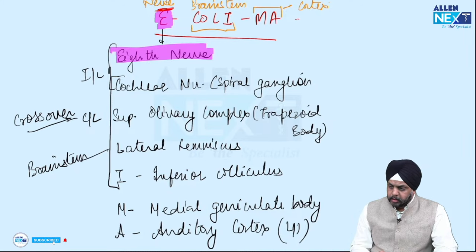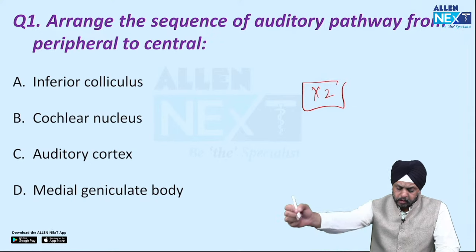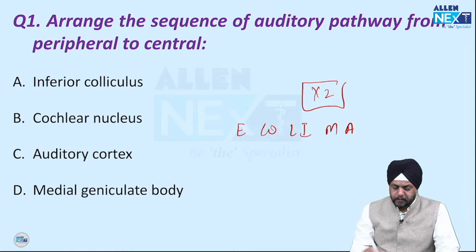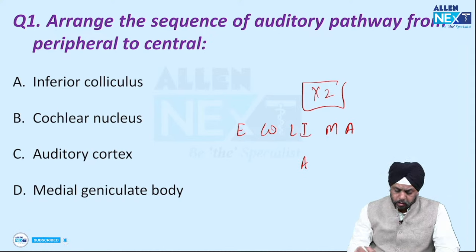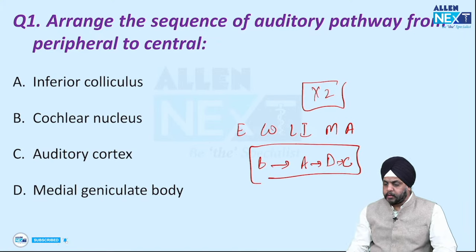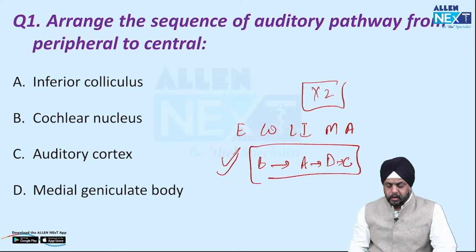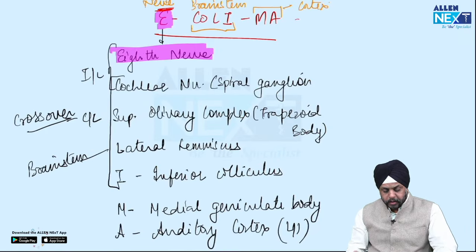When you get this question, the simplest way is to write E.CoLiMa and start placing each option below it. Below I put A (cochlear nucleus), B (inferior colliculus), C (auditory cortex), D (medial geniculate body) — so B, A, D, C is the answer. Very easy, and it has been asked four times in the exam — twice in May 2023, June 2022, and May 2019.